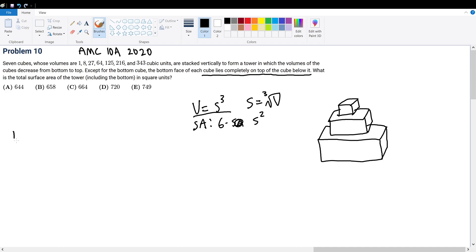The cube root of each volume gives us the side length. The cube with volume one will have a side length of one, the cube with volume eight will have a side length of two, the one with 27 will be three, the one with 64 will be four, and five, six, and seven. These are the dimensions of each cube.